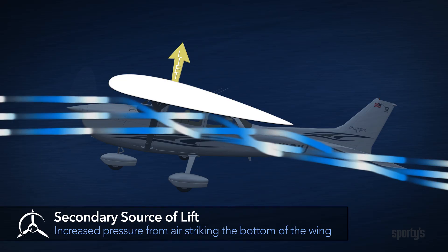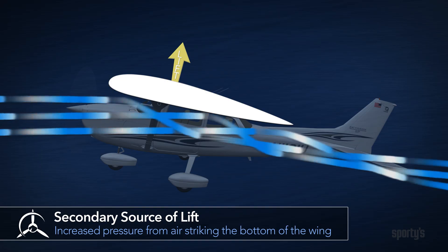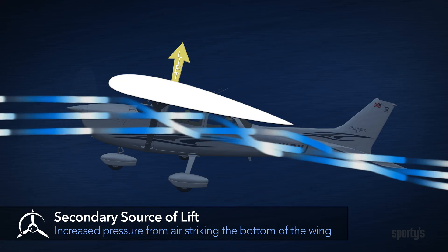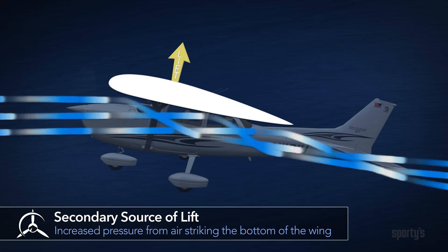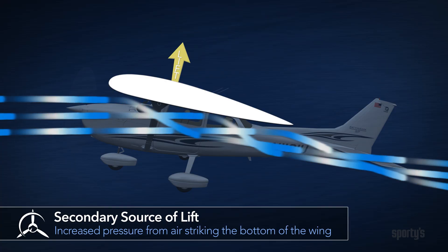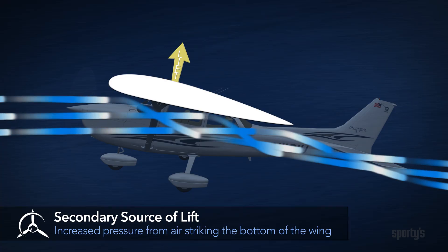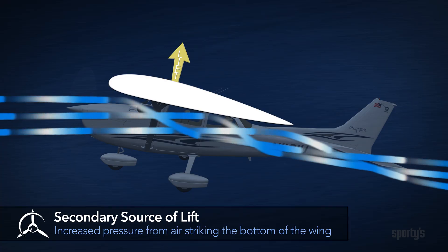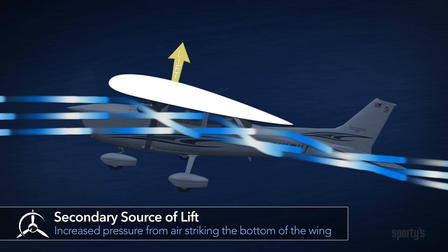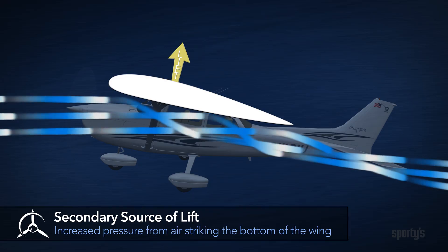While the decrease in pressure on top of the wing is the greater source of lift, the lift made by increased pressure at the bottom of the wing is important when we look at the total lift needed to fly the airplane.